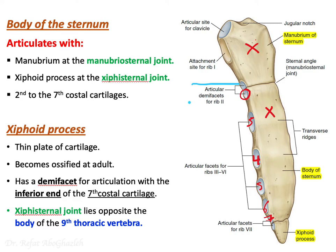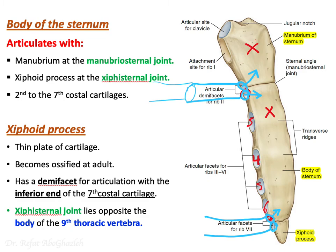The second costal cartilage has two facets: the upper facet articulates with the manubrium, and the lower facet articulates with the body of the sternum. Similarly, the seventh costal cartilage has an upper facet articulating with the body of the sternum, and a lower facet articulating with the xiphoid process.